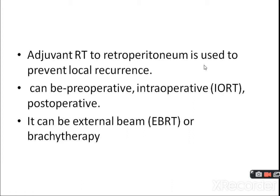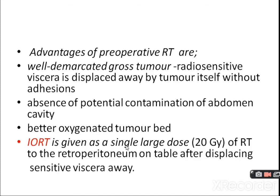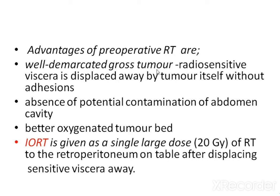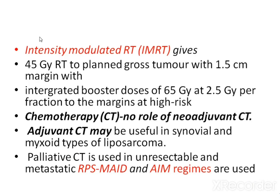Adjuvant radiotherapy to the retroperitoneum is used to prevent local recurrence. It can be pre-operative, intra-operative (IORT), or post-operative, using external beam radiotherapy or brachytherapy. Advantages of pre-operative radiotherapy include well-demarcated gross tumor, radiosensitive viscera displaced away by the tumor itself without adhesion, absence of a potentially contaminated abdominal cavity, and a better oxygenated tumor bed. Other modalities include intraoperative radiotherapy (IORT) and intensity modulated radiotherapy (IMRT).